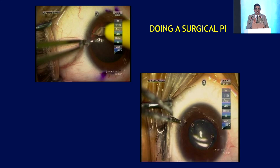If vault is very high, IOP and vault checks must be done consistently. A PI can be done if needed, but must be positioned to divert aqueous flow. Postoperative results are usually very good. ICLs with low or high vault must be examined and re-examined. Ultimately, these patients smile—that is the outcome we aim for. Thank you very much.